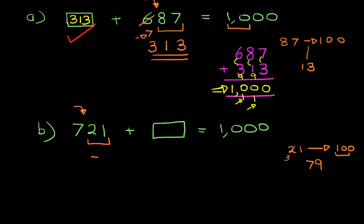So we can write this down, 79. So 21 plus 79 is 100. Therefore, the 7 is crossed out because it's 100, that becomes an 8. What number added to 8 is going to give us the 10? The answer is 2. And we have got our answer, 279.